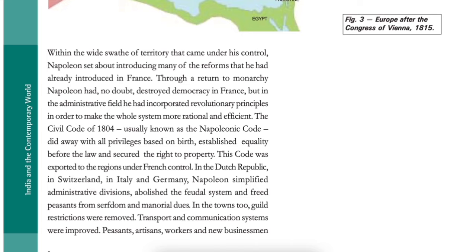Within the wide swath of territory that came under his control, Napoleon set about introducing many of the reforms he had already introduced in France. Through a return to monarchy, Napoleon had no doubt destroyed democracy in France, but in the administrative field he incorporated revolutionary principles to make the whole system more rational and efficient. The Civil Code of 1804, usually known as the Napoleonic Code, did away with all privileges based on birth, established equality before the law, and secured the right to property.